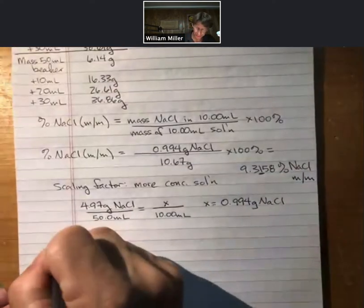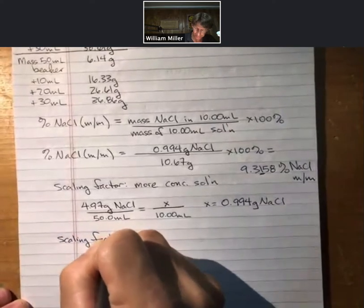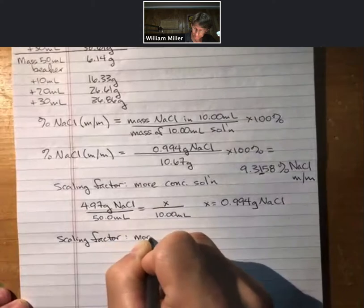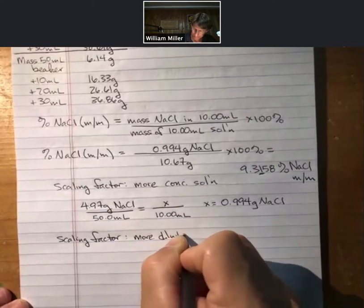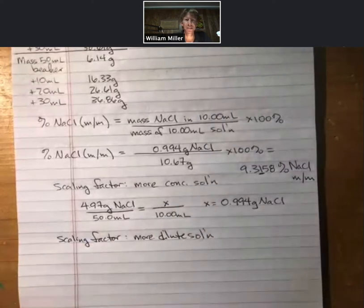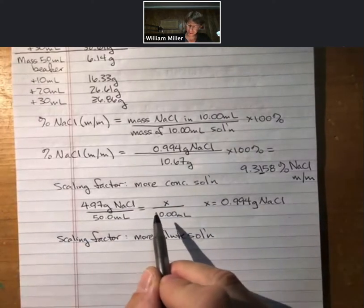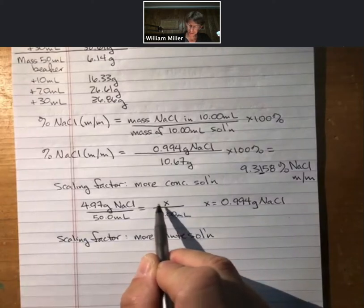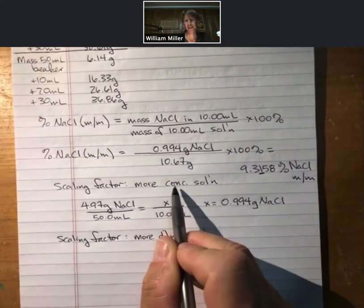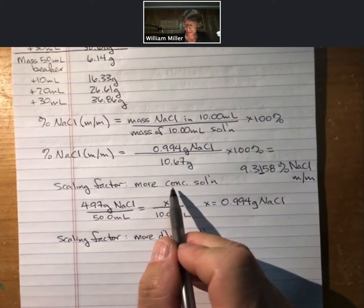Let's talk about at least how to do the scaling factor for the more dilute solution. And in order to know how to do a scaling factor, you always have to think about how you made the solution. We actually took 10 milliliters of our more concentrated solution and diluted it to a total volume of 50 milliliters.